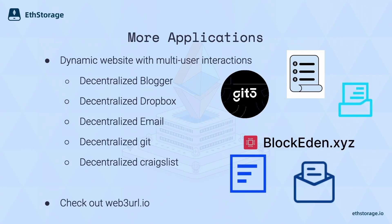We imagine many more applications beyond these two examples. One big application is dynamic websites with multi-user interactions — decentralized blogger, decentralized Dropbox, decentralized email, decentralized Git, or decentralized Craigslist. Anything imaginable in Web2 is now possible in Web3. For example, we have Git3: a demo that translates all of Git to Web3 URL, enabling development on Ethereum. Many of these are already live or running on testnet — welcome to come up with your own crazy ideas.